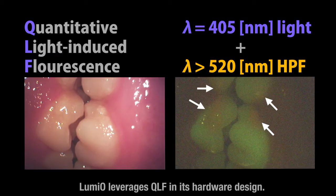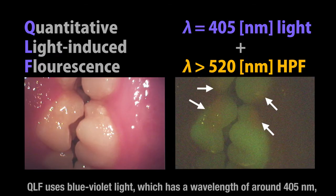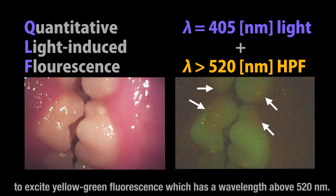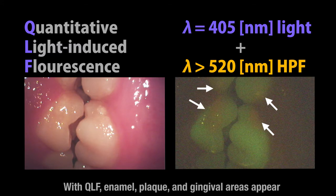Lumio leverages QLF in its hardware design. QLF uses blue-violet light, which has a wavelength of around 405 nanometers, to excite yellow-green fluorescence, which has a wavelength above 520 nanometers.